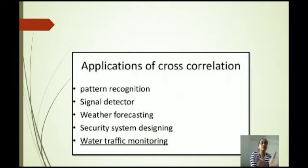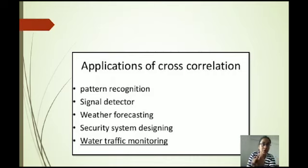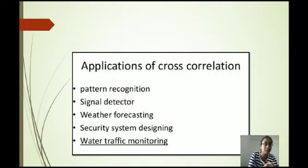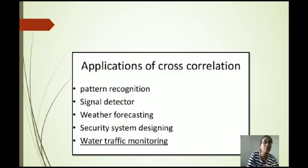The last property of cross correlation is that the cross correlation function corresponds to the multiplication of the spectrum of one signal by the complex conjugate of the spectrum of the other signal, that is the Fourier transform of R12(tau) gives X1(omega) · X2*(omega). This is also called a correlation term. The applications of cross correlation include pattern recognition, signal detection, weather forecasting, equality system designing, and smart traffic monitoring.